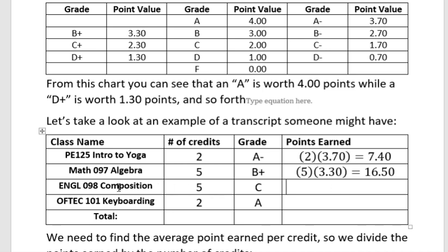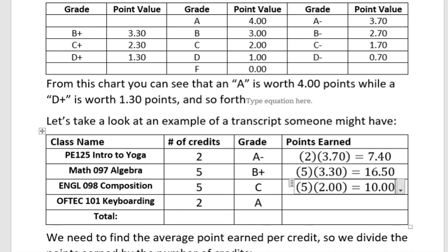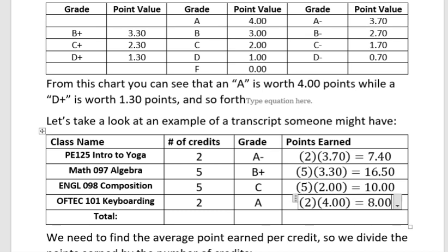For English 98, they had five credits again and this time they had a C, which is worth just two points, and five times two is going to be 10.00. And then for keyboarding it was a two credit class but they had an A. So they have two credits and the A is worth four points, so we get 8.00.